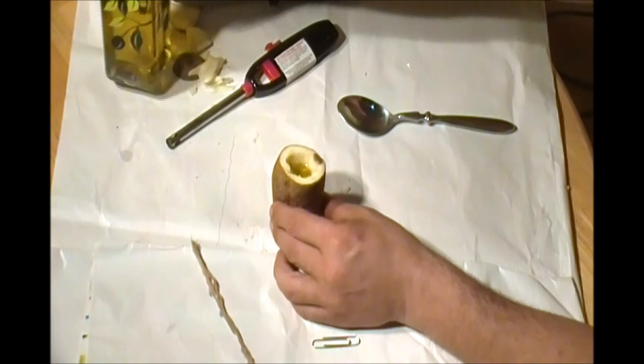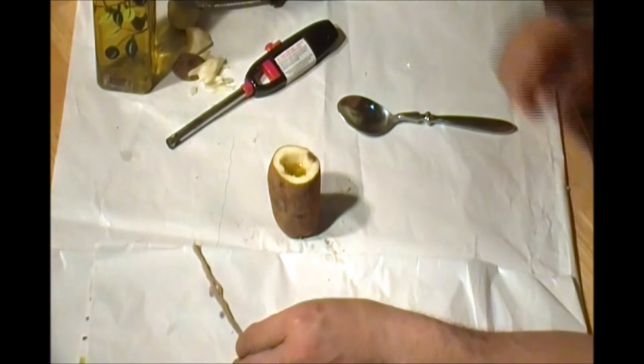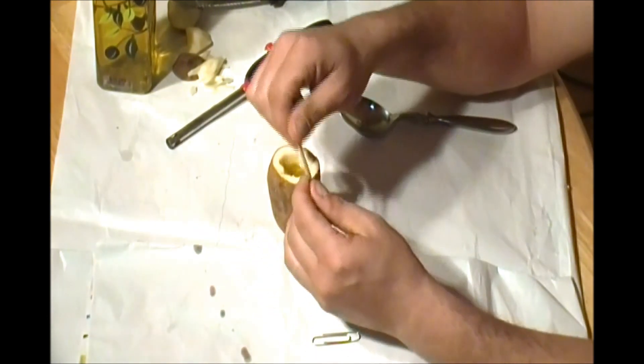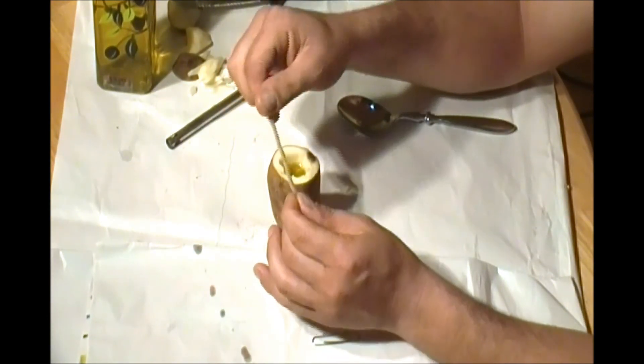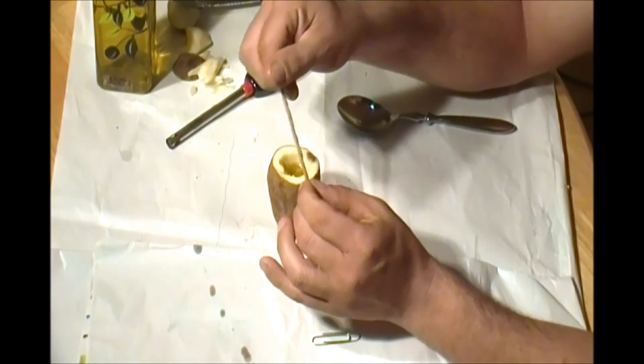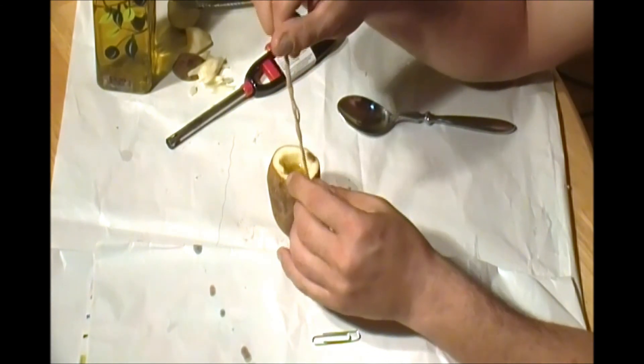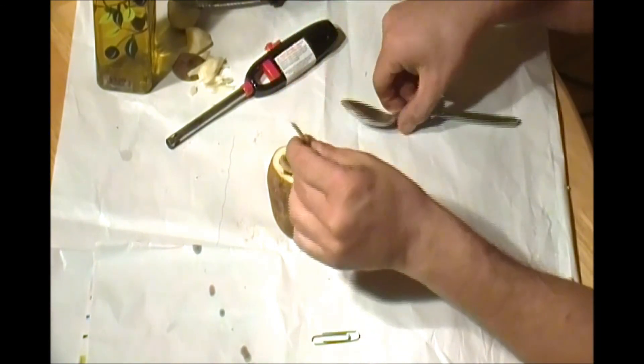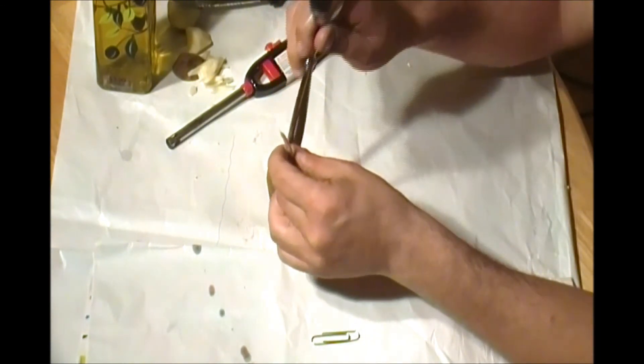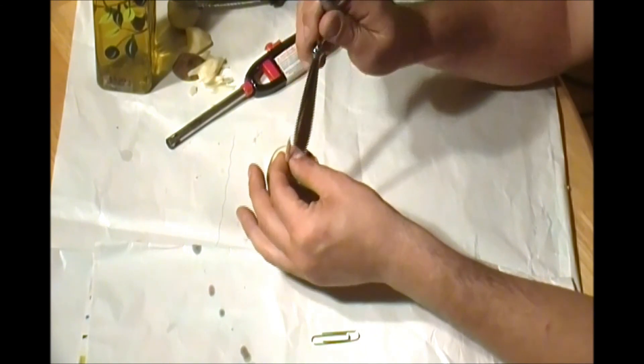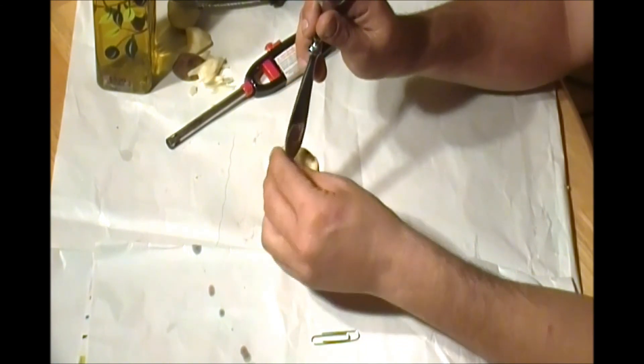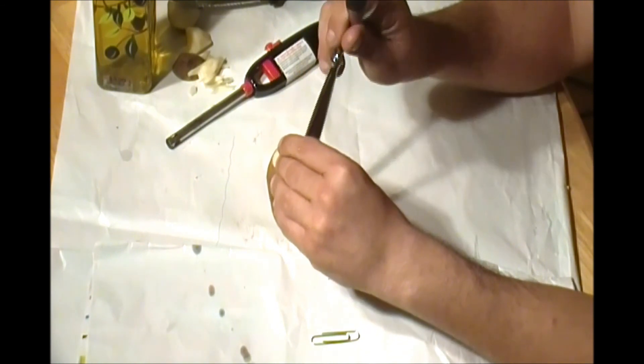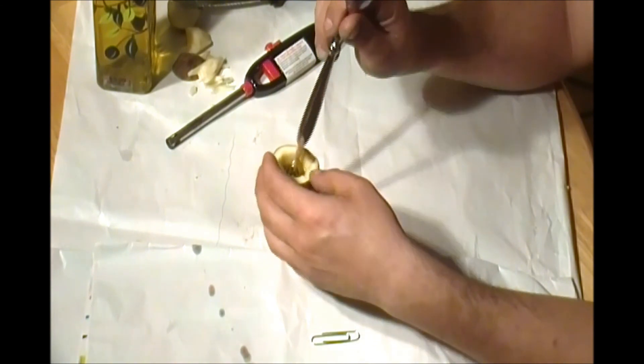Find any cord or anything you have in your house made of fabric, and you can put it inside the potato. Take this cord or fabric or anything similar to that, put it inside the oil, and dip it a little bit so it's saturated.